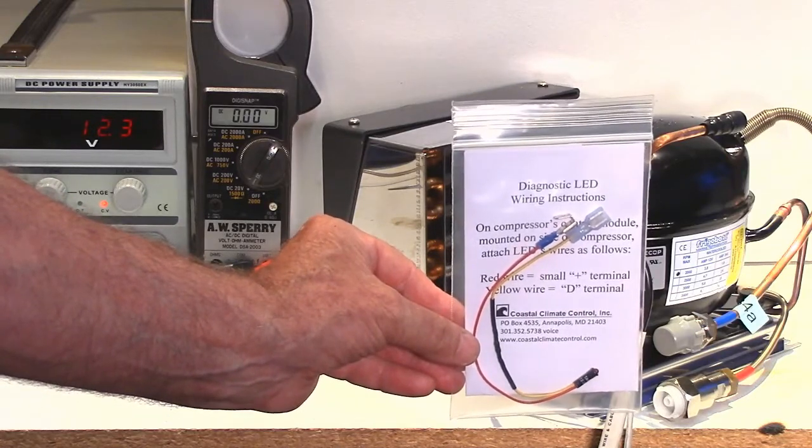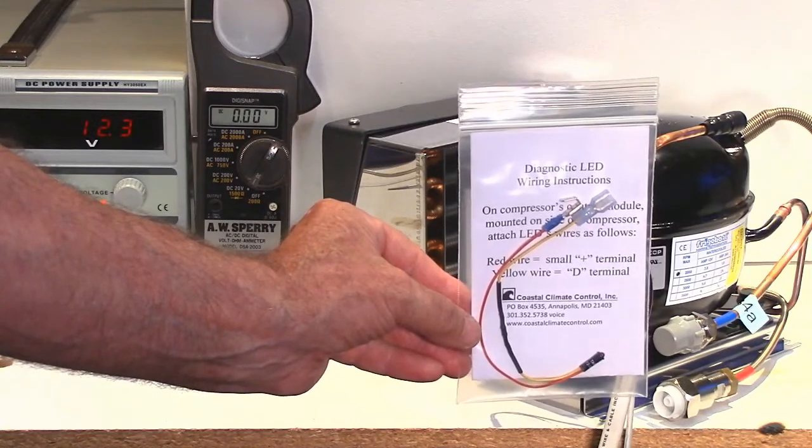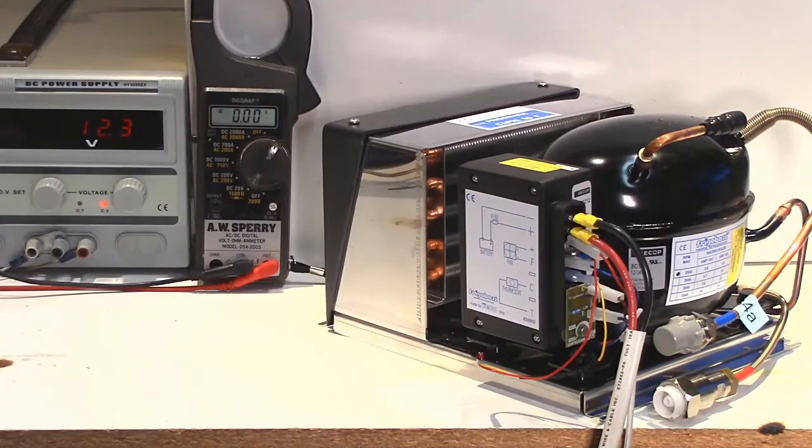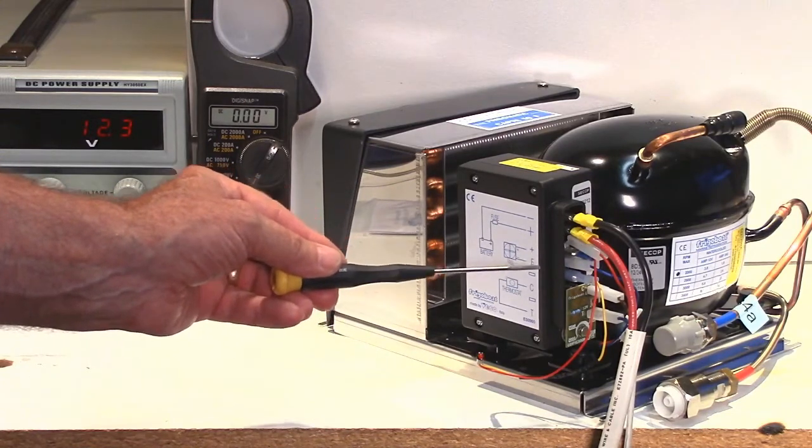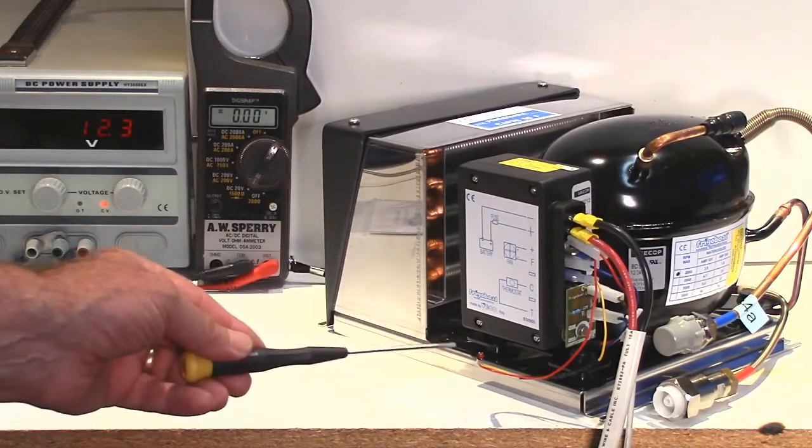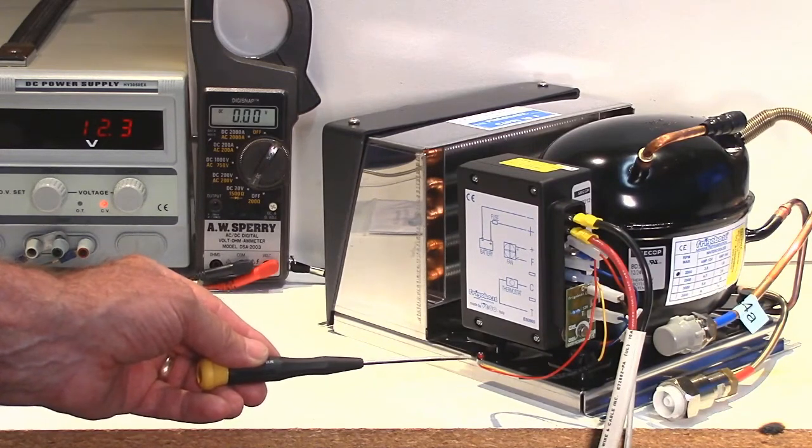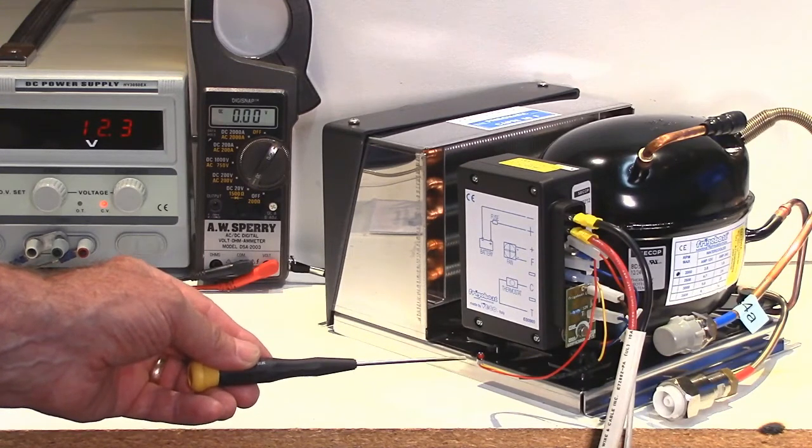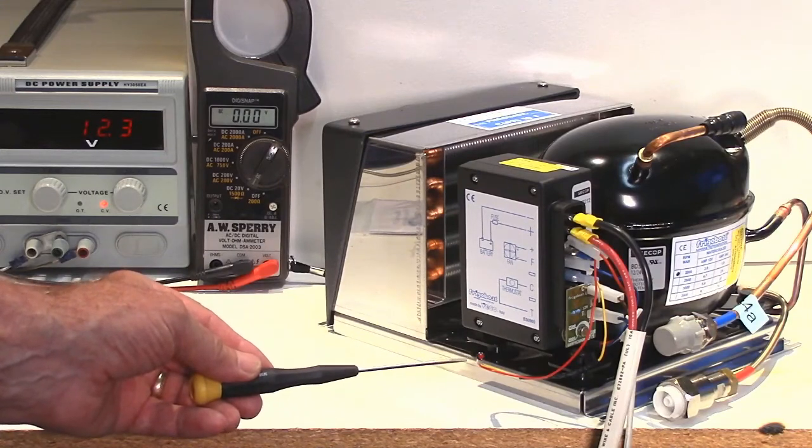Now if you have a diagnostic LED installed like this one that you can buy from Coastal Climate Control, it's simply a 12 volt LED that plugs into the positive and the D terminal on the controller and we have one here already installed. The yellow wire is on the D terminal and the red is a piggyback that can go either on the fan positive or the main positive coming in. And here is the LED here, just a very small LED, you can mount it somewhere so you can just check it if you think there's a problem. And it's flashing once every 5 seconds which tells us it's a low voltage condition and that is very reliable, these don't lie. The one flash every 5 seconds, low voltage.